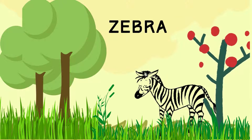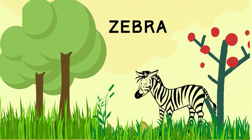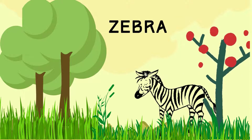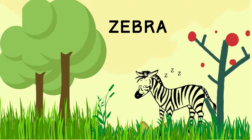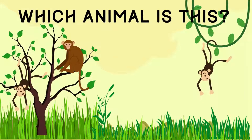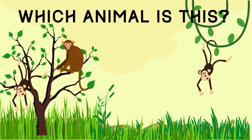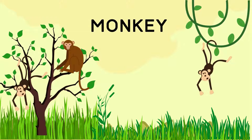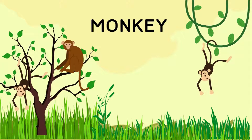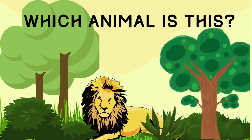Which animal is this with black and white stripes? This is a zebra! Zebra stripes are so cool. Which animal is this hanging on trees? This is a monkey! Monkeys are so funny.